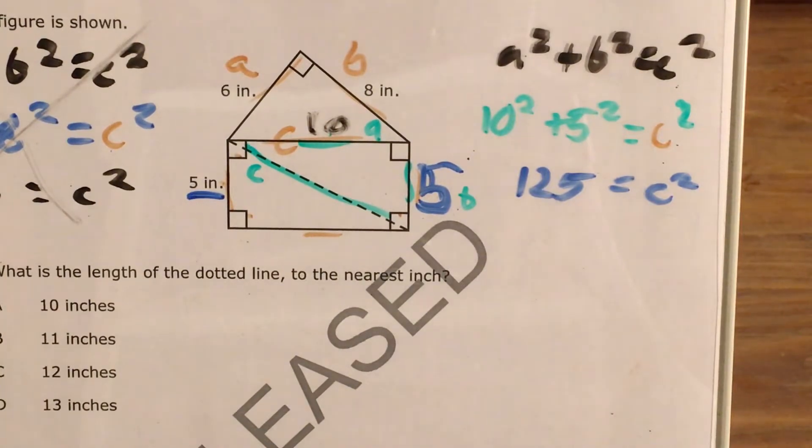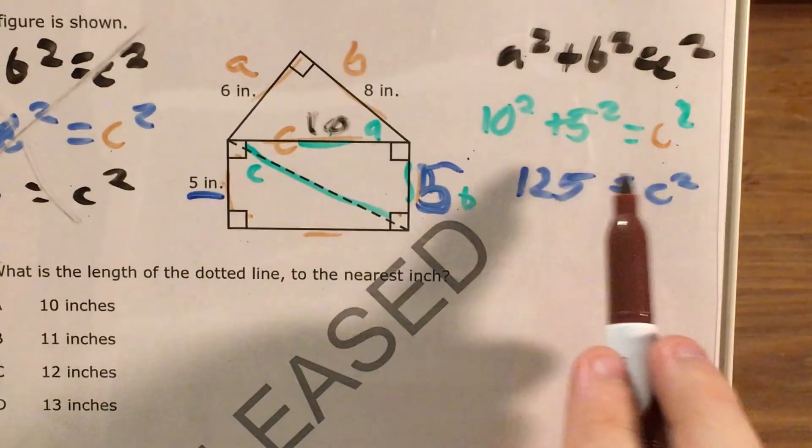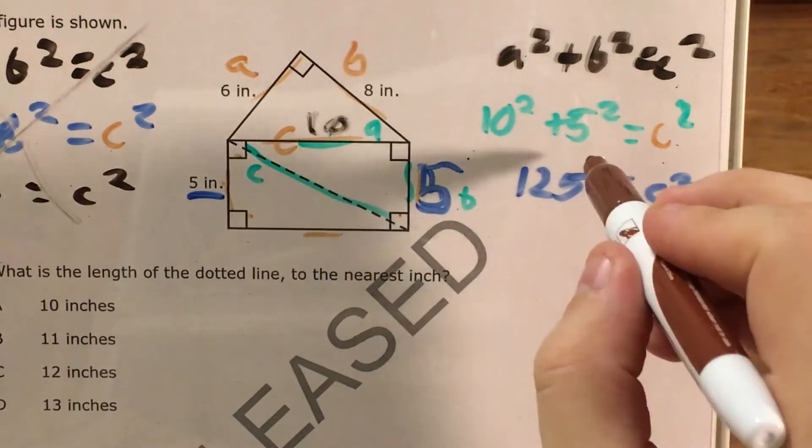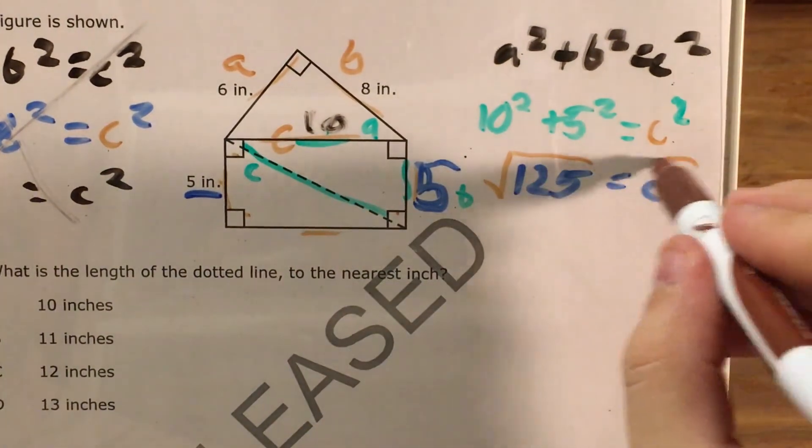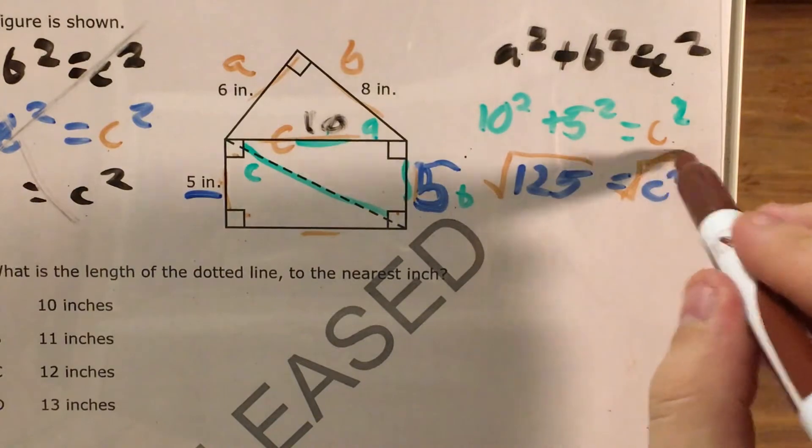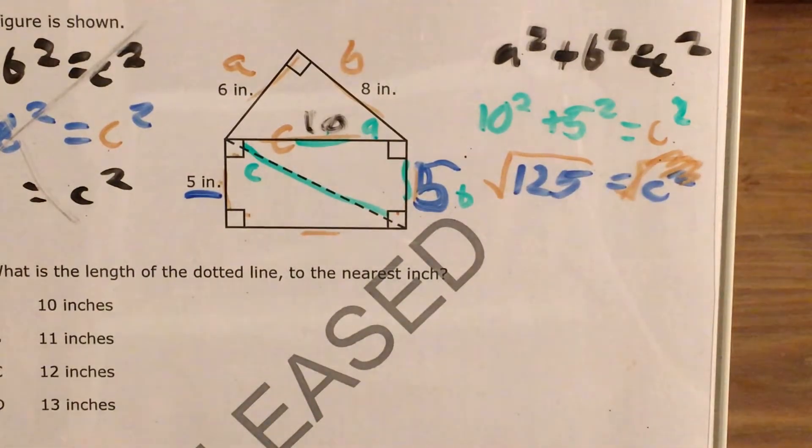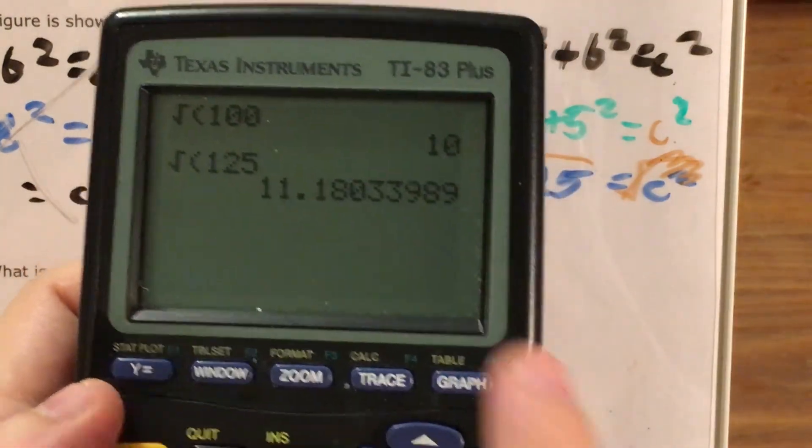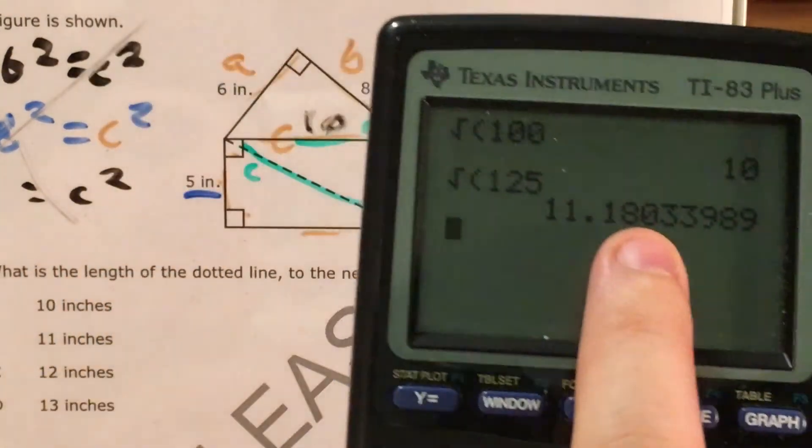And now the last step of any Pythagorean theorem problem, once I get it down to something squared equals something, is just to take the square root of that number. Because I would take the square root of both sides, and square root and square cancel each other out. So C is going to be the square root of 125, which is a little more than 11.